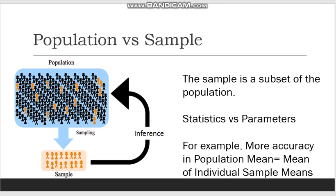In statistics, the population is a large dataset about which we want to find out. I'll help you understand with examples later on. The sample is simply a part of the population which we use to derive approximations and generalizations about the population. We use the sample because it is a very tedious and difficult task to take the data of every single member of the population.